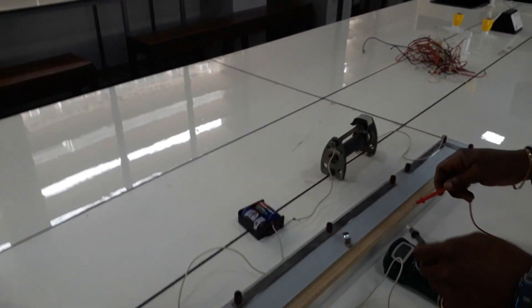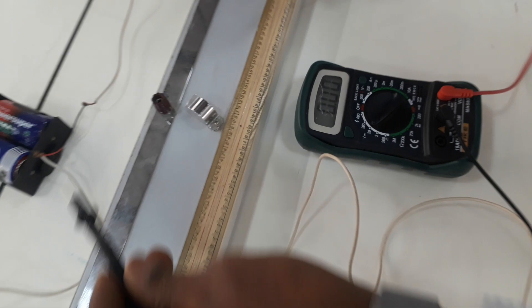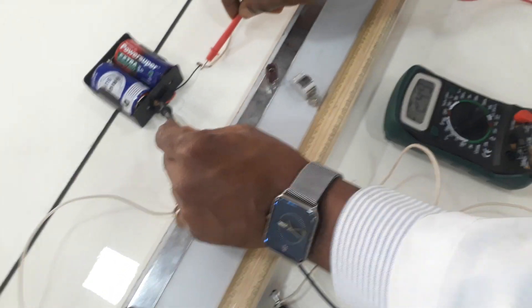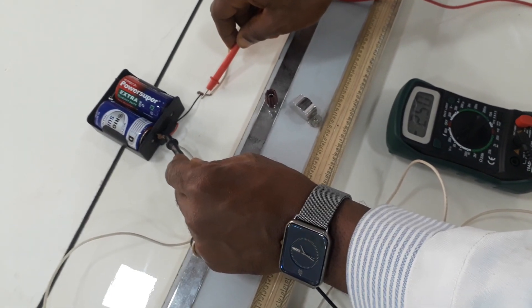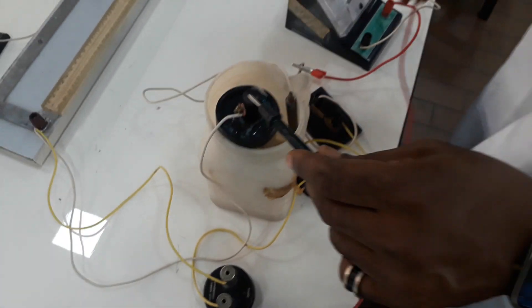And to do that, I will have to put the multimeter on the voltage mode, and then measure. Now I have my 2.5 on my dry cell. I have 2.5 volts on my dry cell.